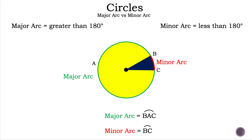Now, what are minor arcs? Minor arcs are arcs that are less than 180 degrees. Let's talk about the notation, or how we write them — we only use two letters and we put the arc symbol above the letters as well. In this case, our minor arc is the red part of the circumference, or arc BC. Can we write it as arc CB? Yes we can. There's no letter in between, so it doesn't really matter how we write this minor arc.